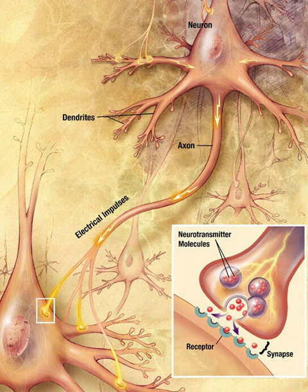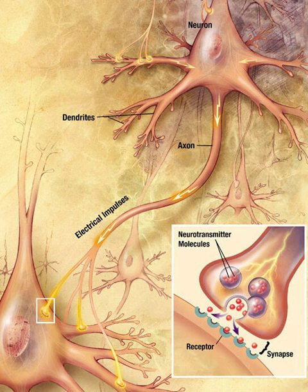At a prototypical synapse such as a dendritic spine, a mushroom-shaped bud projects from each of the two cells and the clasps of these must press flat against one another. At this interface, the membranes of the two cells flank each other across a slender gap, the narrowness of which enables signaling molecules known as neurotransmitters to pass rapidly from one cell to the other by diffusion. This gap is sometimes known as the synaptic cleft.